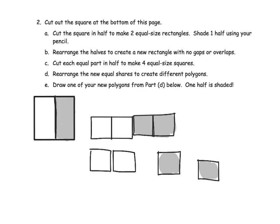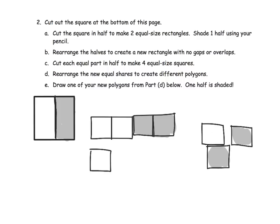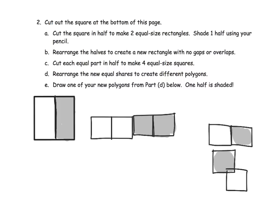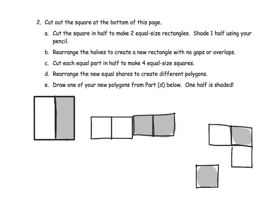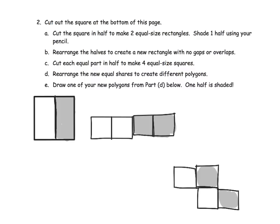They want us to rearrange, so I could say let's rearrange them. There we go — that's part D. I could rearrange them to make a different polygon. Or if I wanted to, I can get creative and make a different kind of polygon altogether. I know that half is shaded because it started out like this — that's half. Then it looked like this — this is still half. We just rearranged the pieces. Half looks very different in each of these different configurations.